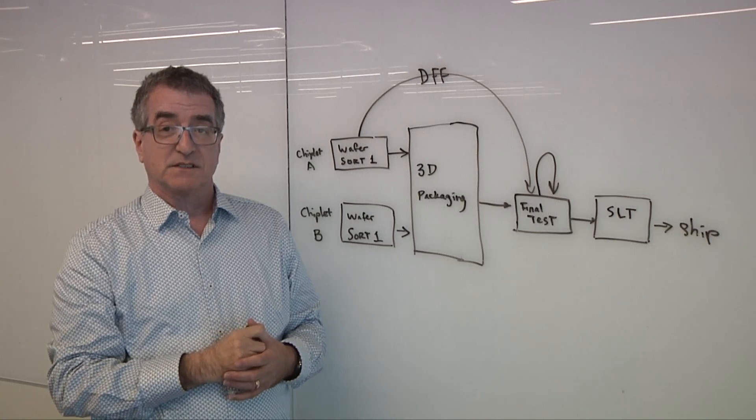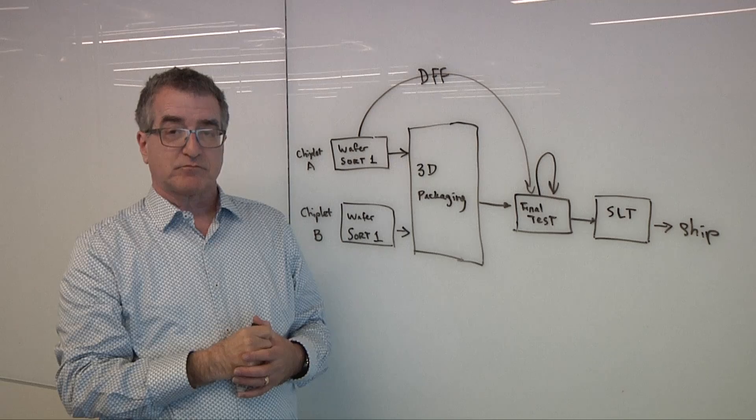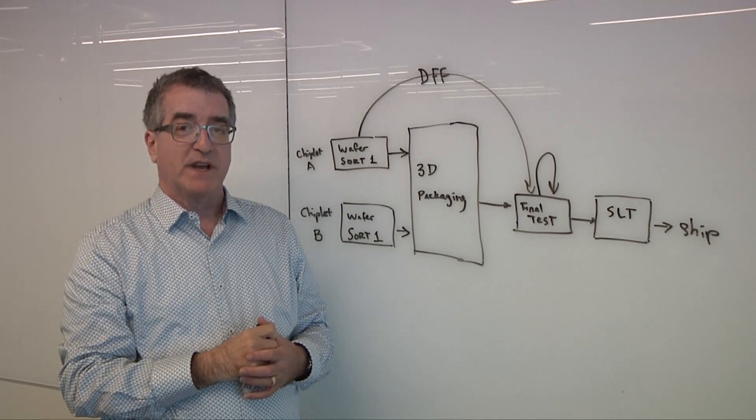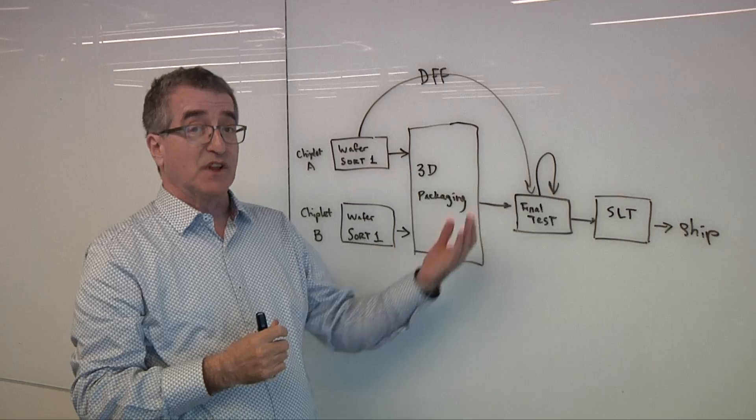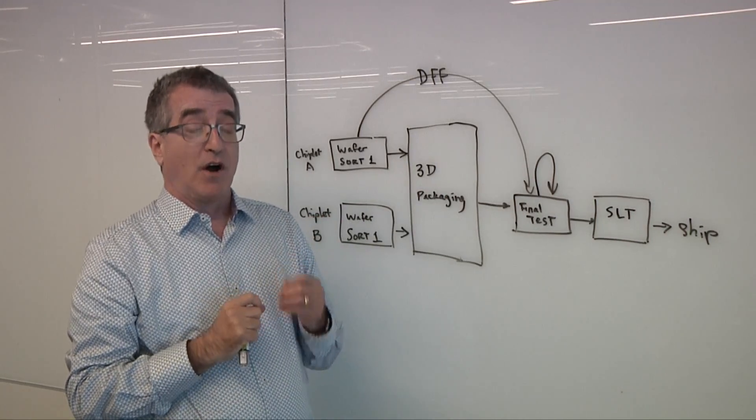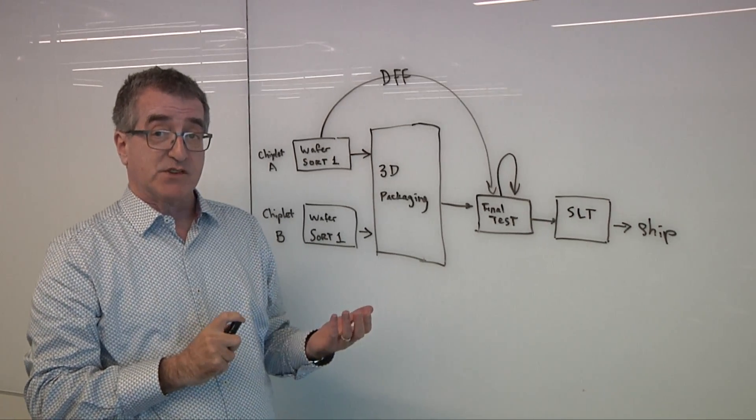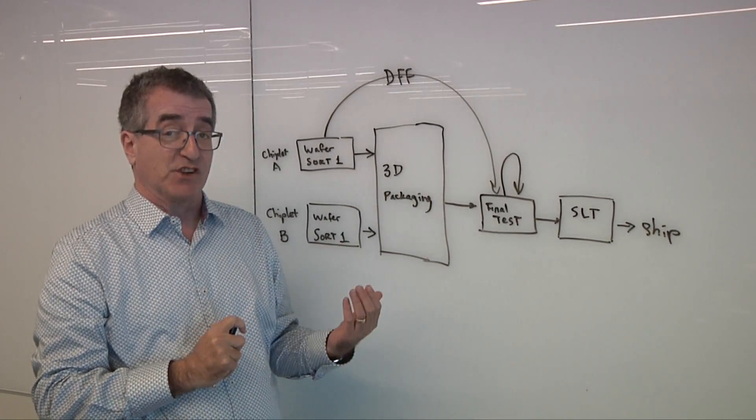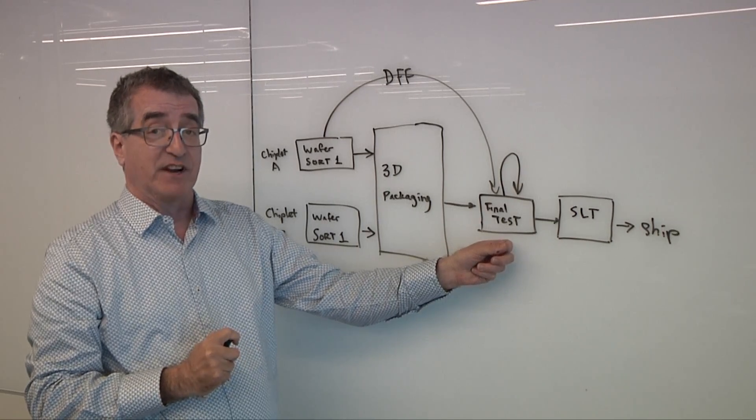And just to be clear, adaptive test is not necessarily an adaptive test machine, right? It's a different way of doing it. It is a different way of doing it. However, to do the last most complicated step, you do need, often, extra hardware. You need to be able to make inferences, machine learning decisions, in real time on the ATE at final test.